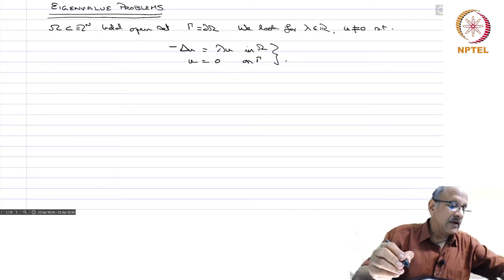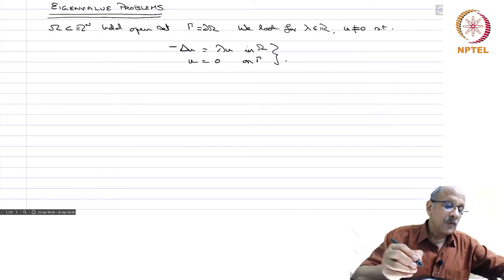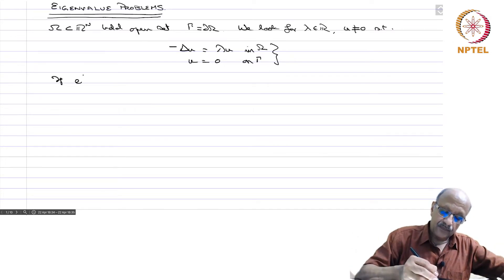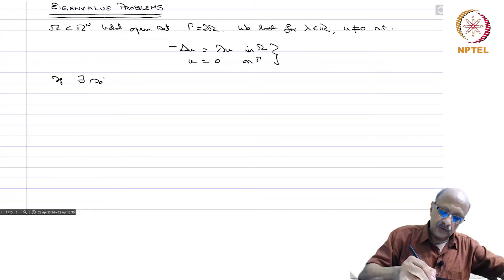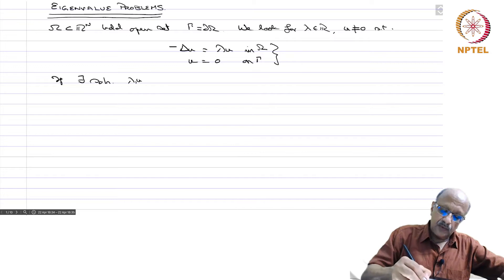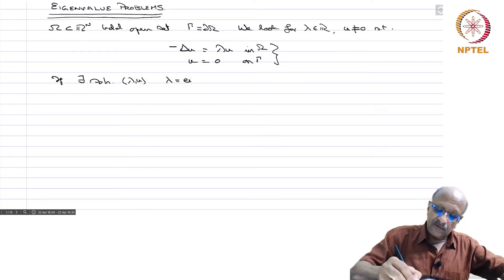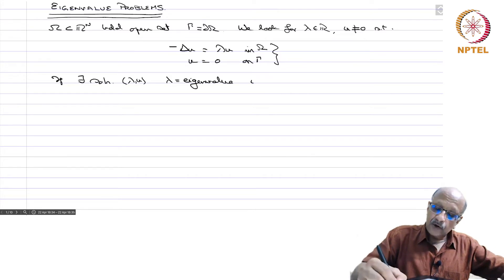This is called the Eigenvalue problem. If there exists a solution (lambda, u), then lambda is called an Eigenvalue and u is called an Eigenfunction.